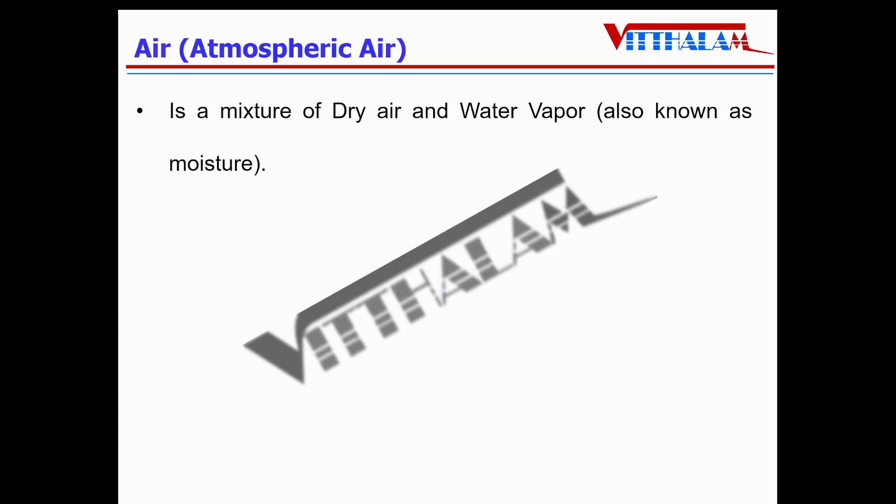Air, or normally we say atmospheric air, is a mixture of basically dry air and water vapor. Water vapor is also known as moisture.